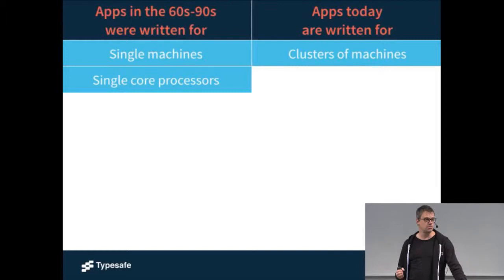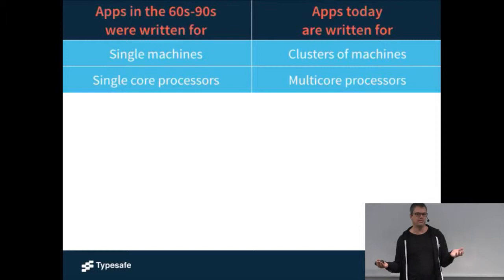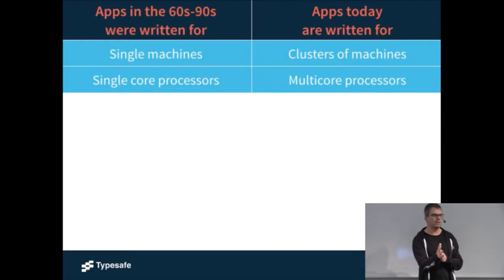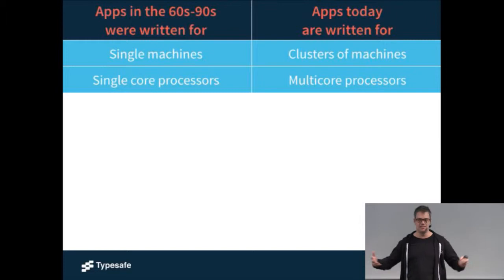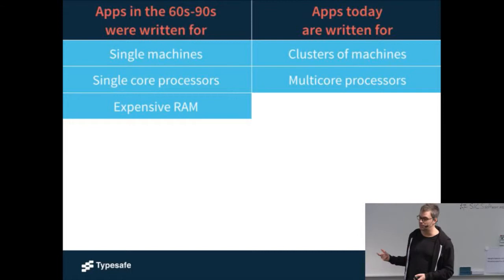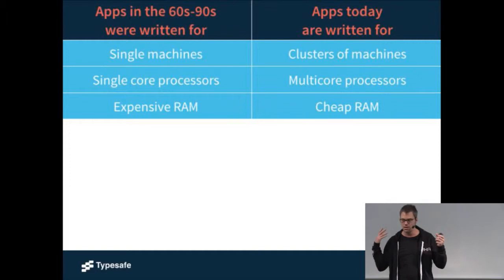Most of these machines used to run single-core processors. Today it's really hard to find even a dual-core — even my phone is a quad-core today, and that has completely changed the picture. We can't shoehorn everything into the old von Neumann machine any longer. We really need to break free of that and accept that the world is concurrent. It's always been concurrent — it's just that we can't fake it any longer. RAM used to be really expensive, which had a lot of implications in how we design software. Today RAM is ridiculously cheap.